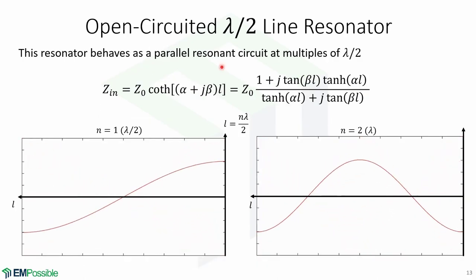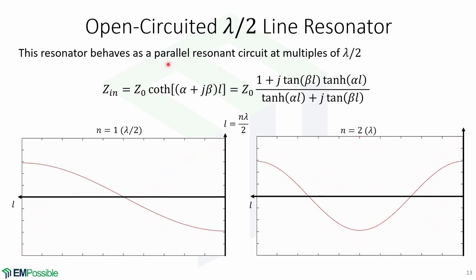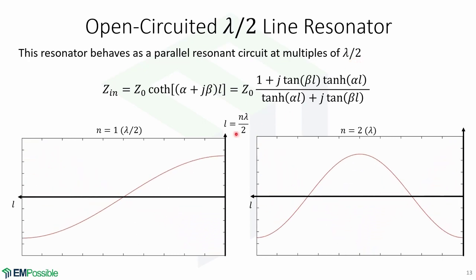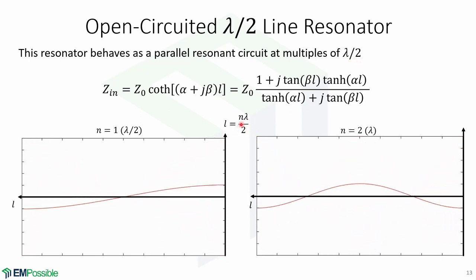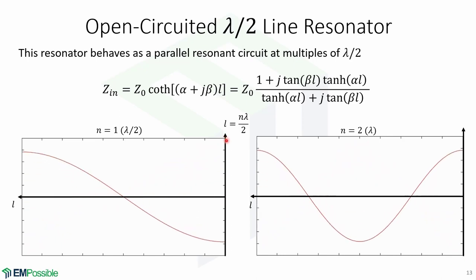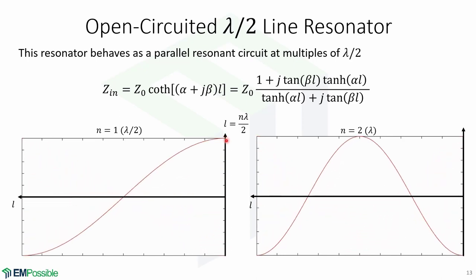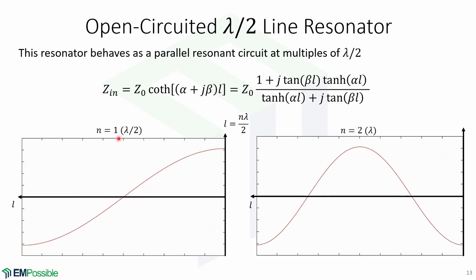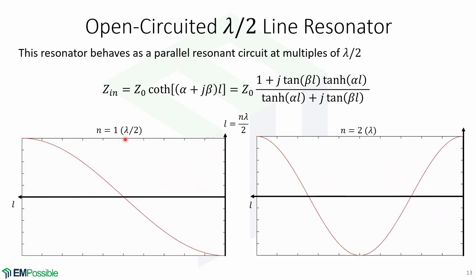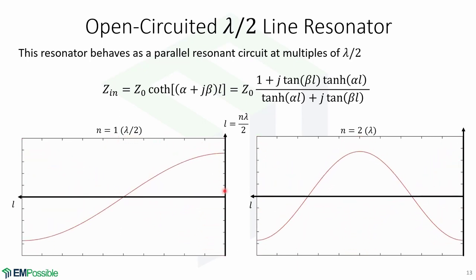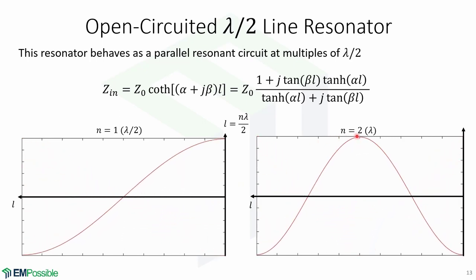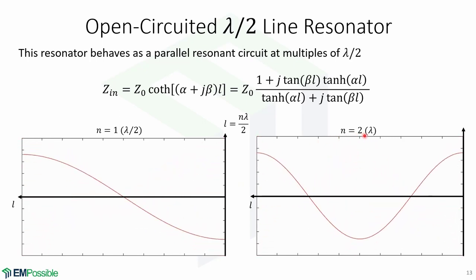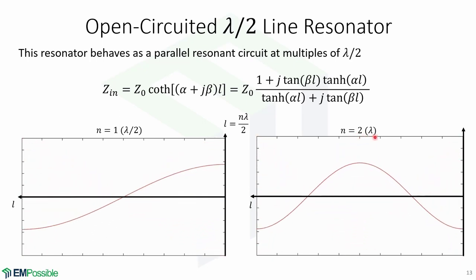Now let's look at the open-circuited half-wavelength line resonator. This resonator behaves as a parallel resonator at multiples of lambda over 2, where L equals n*lambda over 2 and n is an integer. Here is the voltage distribution for an open-circuited half-wavelength resonator where n equals 1 and the length equals lambda over 2. Here is another animation of the second resonant mode where n equals 2 and the length equals lambda.